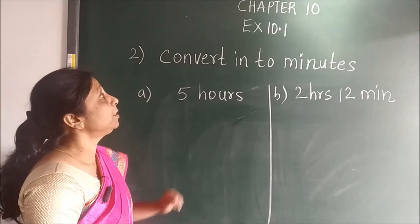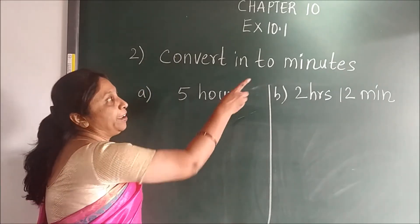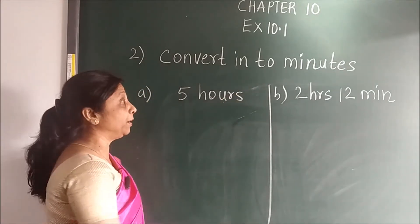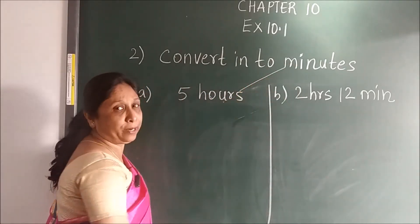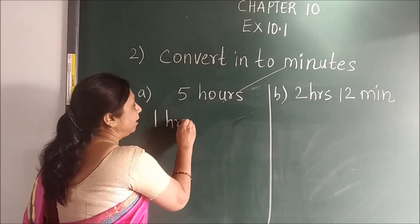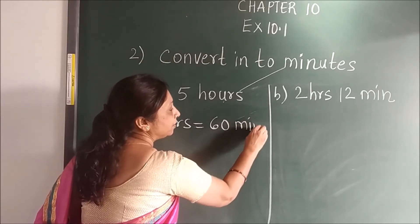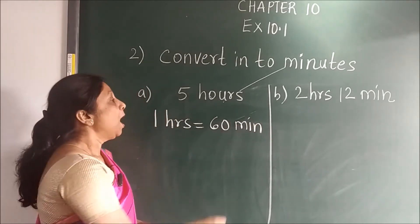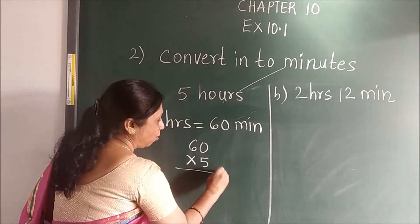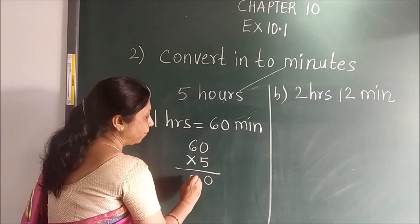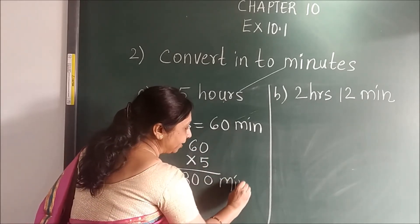In the next question, convert into minutes. Here hours is given and you have to convert into minutes. So you have to find the relation of hours and minutes: 1 hour is equal to 60 minutes. Now 60 will be multiplied by 5. 5 zeros are 0, 5 sixes are 30. So we will have 300 minutes.